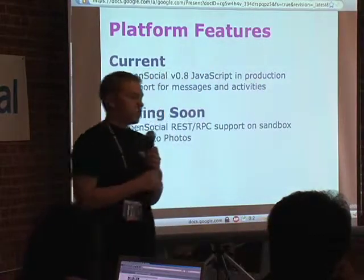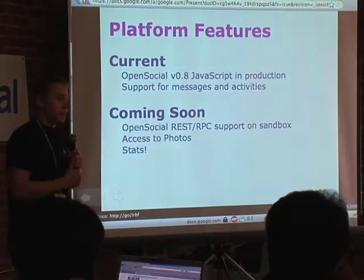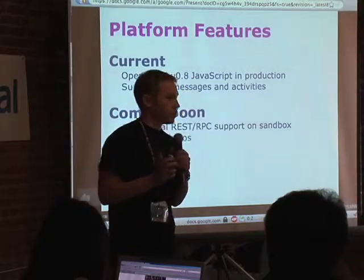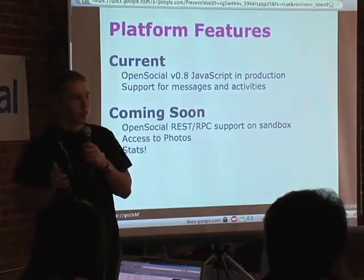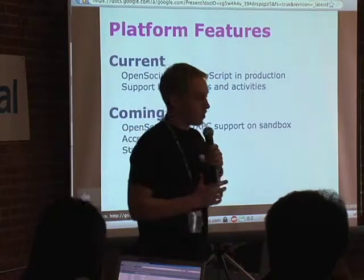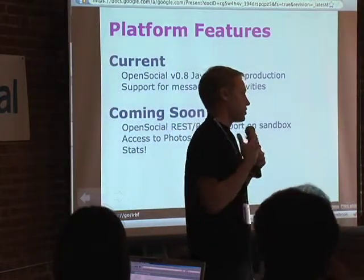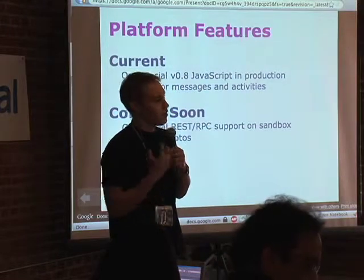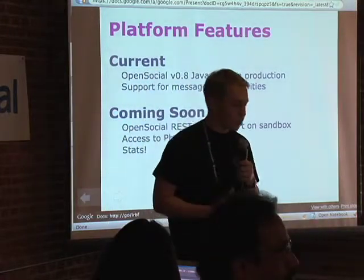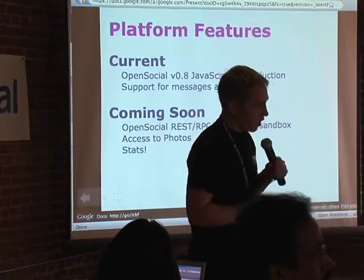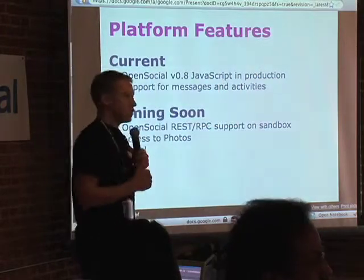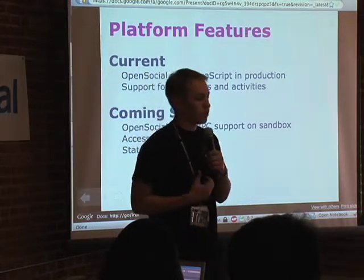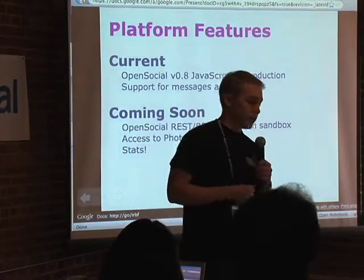A little bit about the features. Right now we just rolled out version 0.8's JavaScript onto production. So if you've been looking at the 0.8 APIs and waiting for it to get on production, it just happened this morning. We also have support for sending messages between users and posting to activity streams — those are the viral channels that will help your app to spread. Coming soon: OpenSocial's REST and RPC support.